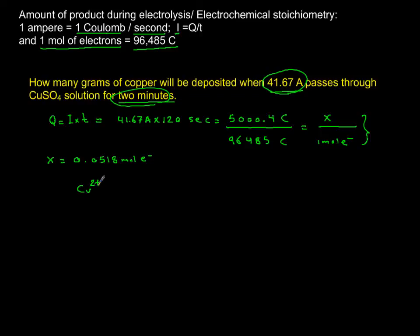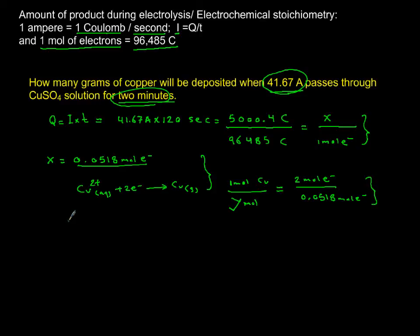Now if you look at copper, copper is 2 plus in copper sulfate, and it requires two moles of electron to give you one mole of copper. So let's use this concept and say one mole of copper for every two moles of electron. Let's use our calculated moles of electron and find how many moles of copper. When we do cross multiplying, we produce 0.0259 moles of copper.